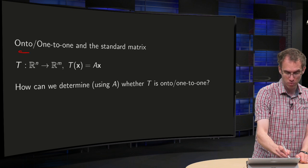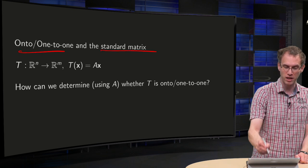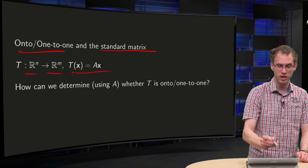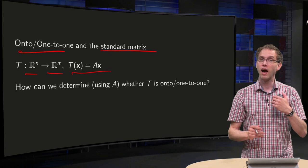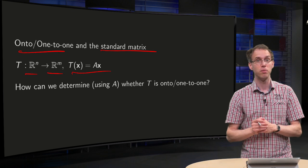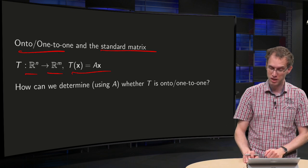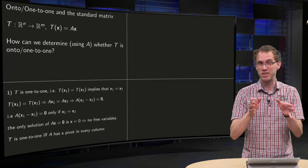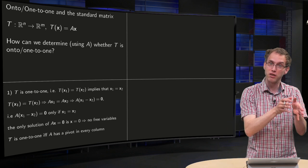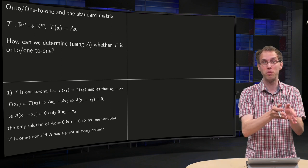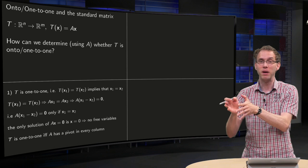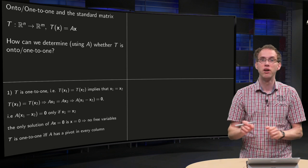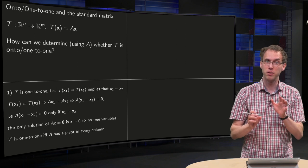The relation between the notion of one-to-one and the standard matrix. So we have a transformation T from R^n to R^m, T(X) equals A times X. And now how can we determine using the matrix A whether our transformation T is one-to-one or onto? Notice always this difference. You have on one hand the matrix and on the other hand the transformation. Transformation can be one-to-one or onto and the matrix cannot. You cannot say that the matrix is one-to-one. That's nonsense. You can only say this from the transformation. So be careful about that.